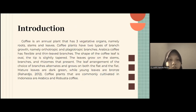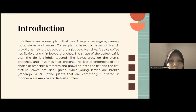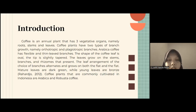Coffee is an annual plant that has three vegetative organs: root, stem, and leaves. Coffee plants have two types of branch growth: orthotropic and plagiotropic branches. Arabica coffee has flexible and thin leaf branches. The shape of the coffee leaf is oval, the tip is slightly pointed. Mature leaves are dark green while young leaves are brown. Coffee plants commonly cultivated in Indonesia are Arabica and Robusta.